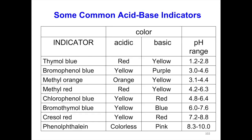These are some common acid-base indicators. For example, thymol blue: in acidic medium it shows red color, but in basic medium it shows yellow color. The pH range of thymol blue is between 1.2 to 2.8 — that is the range where the color changes from red to yellow.